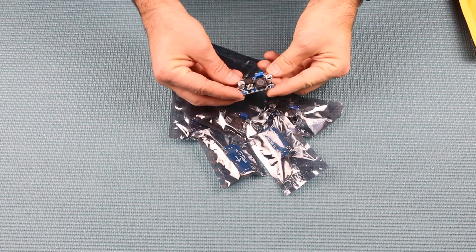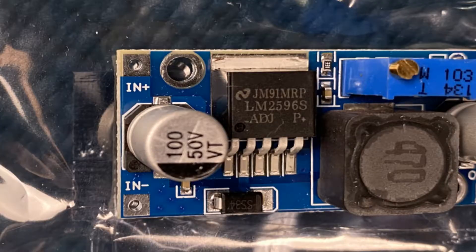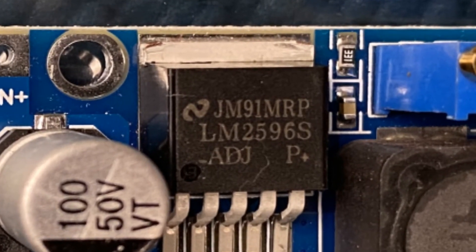Two of the voltage outputs will be provided by these buck-down converters. Since the LM2596S is the heart of these devices, they can supply a maximum of 3 amps.